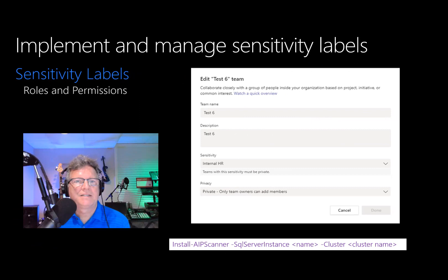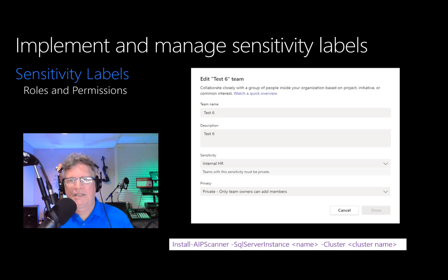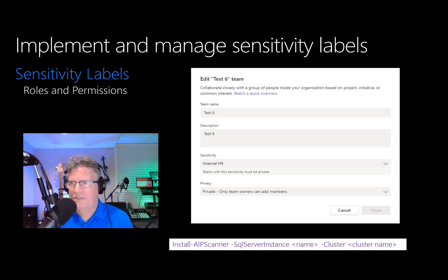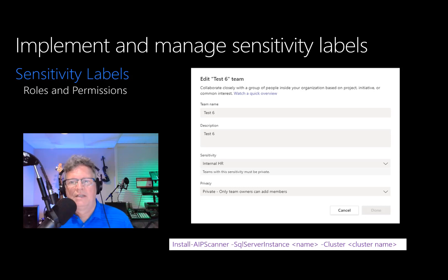Implement and manage sensitivity labels. In addition to using sensitivity labels to classify and protect documents and emails, you can also use sensitivity labels to protect content in the following container types: Microsoft Team Sites, Microsoft 365 Groups (formerly Office 365 Groups), and SharePoint Sites. This enables lifecycle management of content within different types of containers in M365. Containers where labels can be published include M365 Groups, Microsoft Teams, Yammer Communities, and SharePoint Sites.